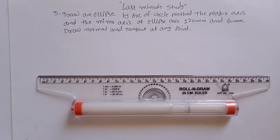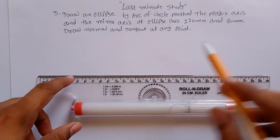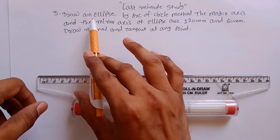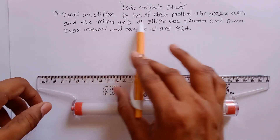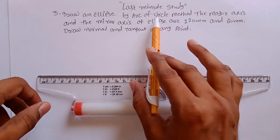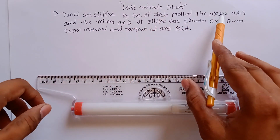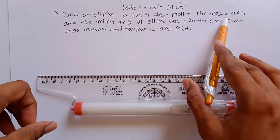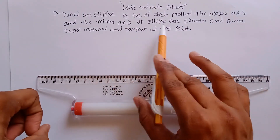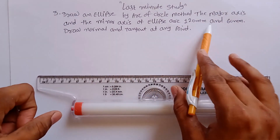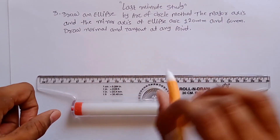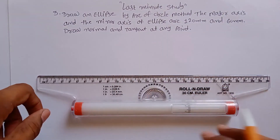Problem number 3 from engineering cow sheet. This problem is to construct an ellipse by the arc of circle method. You are given a major axis and minor axis of the ellipse which are 120 mm and 60 mm.